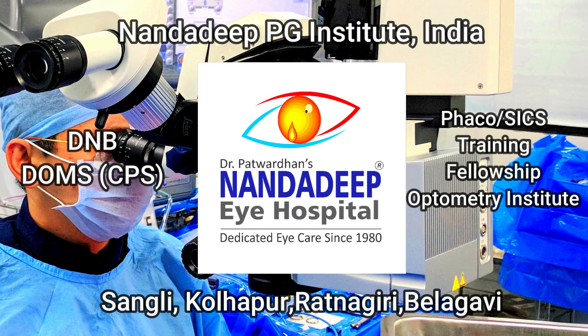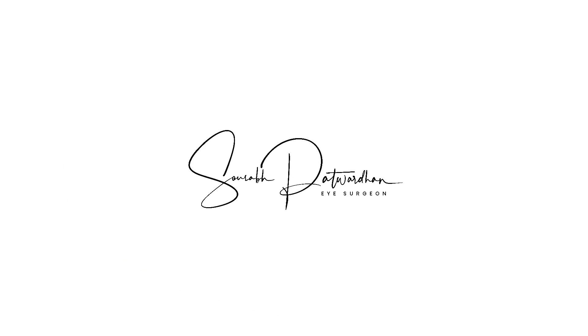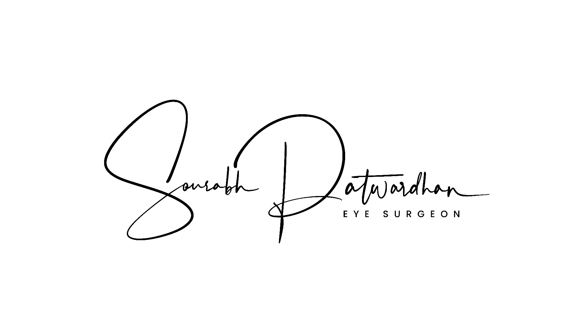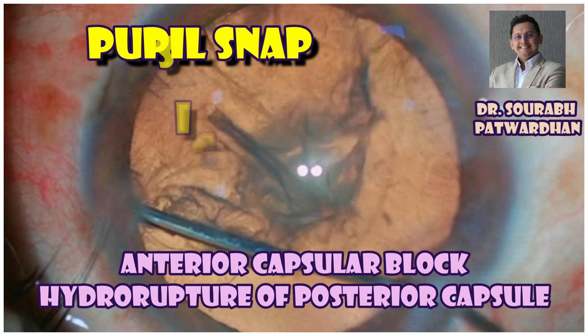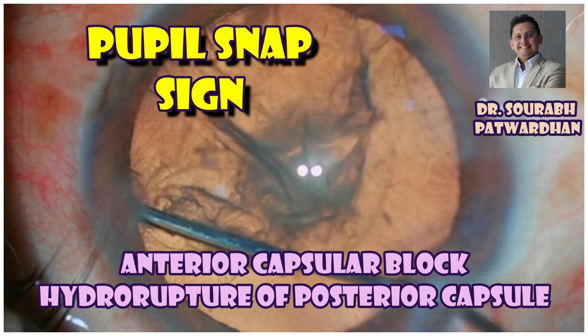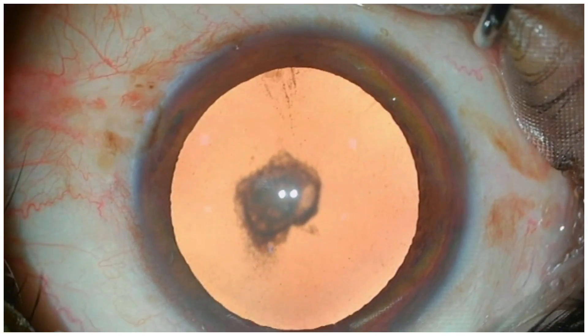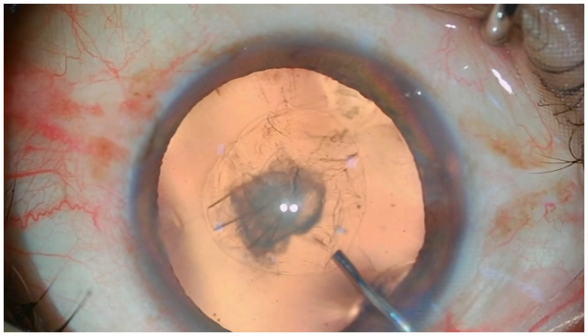In this video, I will be demonstrating a very famous sign described by Dr. Yo. It is called Pupil Snap Sign, which indicates anterior capsular block and hydro rupture of the posterior capsule.